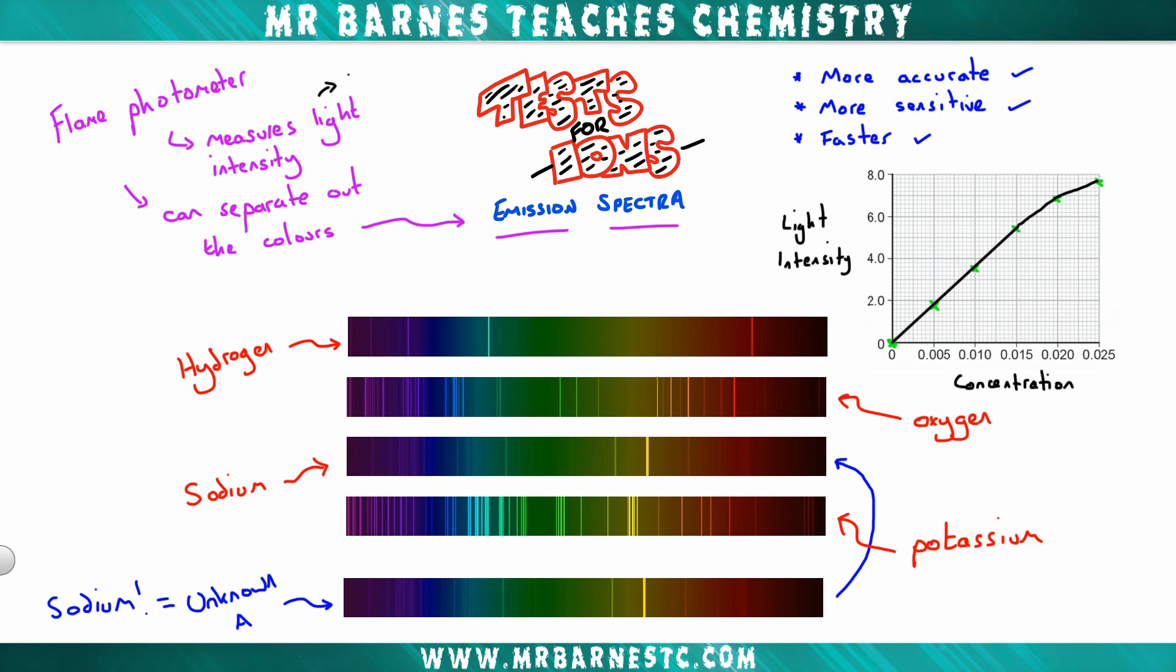Okay the final thing we need to talk about then is that measuring light intensity. So I've got a graph over here which is showing me the light intensity and the concentration of different solutions. What we can do is we can work out the concentration of an unknown. This is known as a calibration curve.